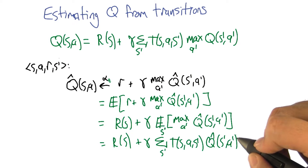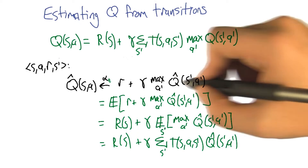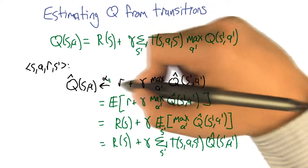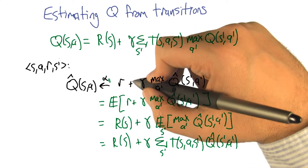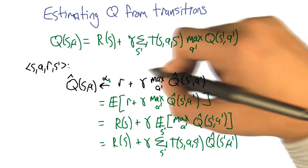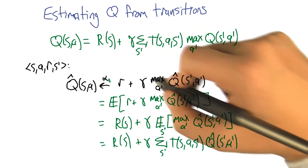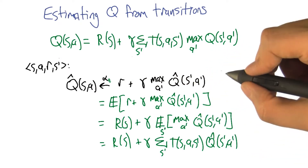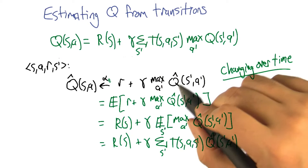I'm kind of cheating though. Do you see how I'm cheating? When I told the story about this alpha arrow updating thing, I said that it converges to the expected value of this quantity here. But this quantity here, since it's Q-hat, it's actually changing over time. So this target is actually a moving target.